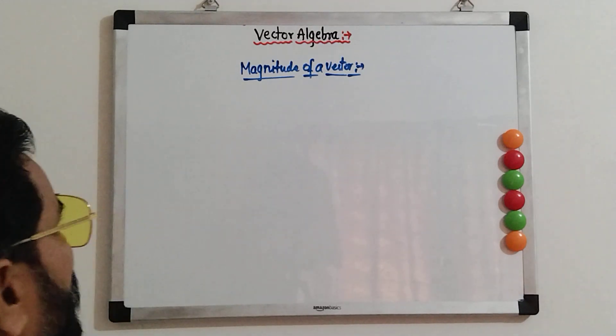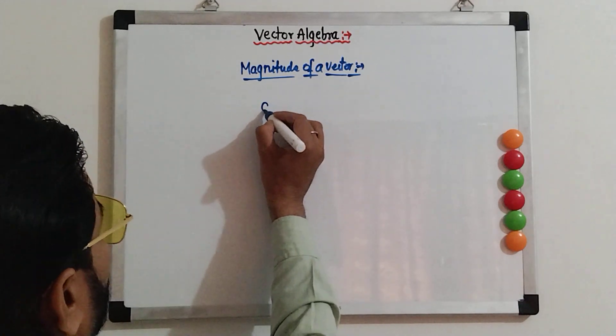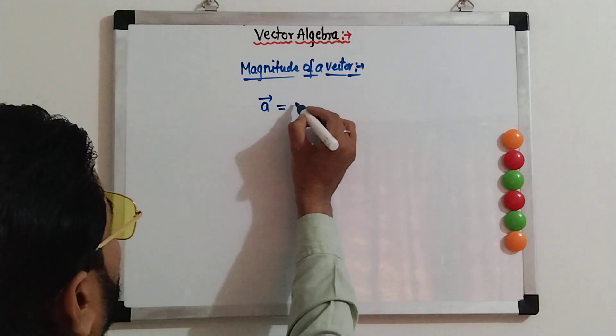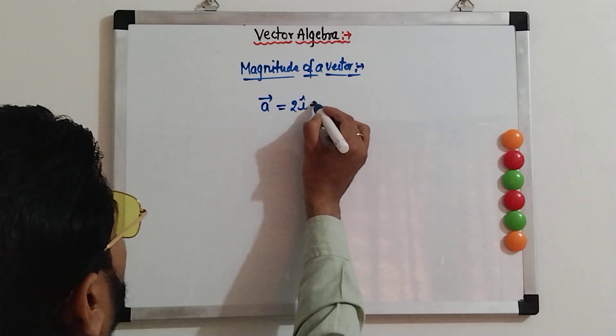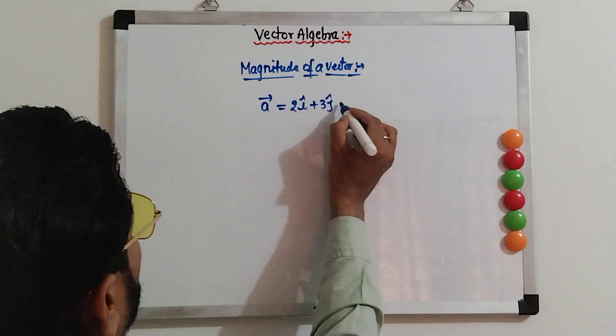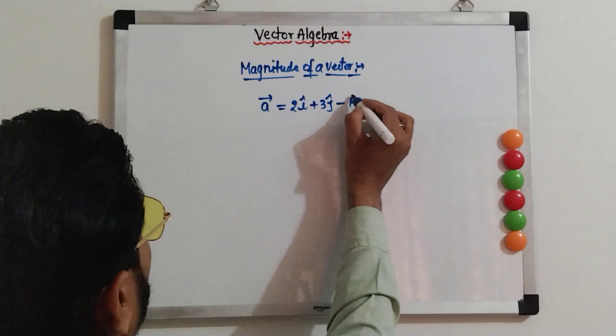Now, in this video, we are going to talk about magnitude of a vector. Suppose vector A is 2i plus 3j minus k.